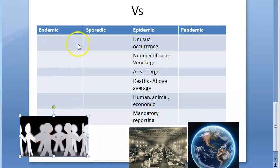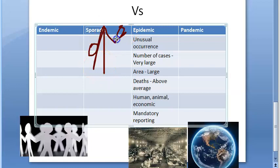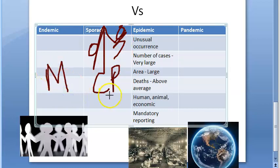Now let us move on to sporadic. Sporadic means irregular, haphazard occurrence of cases from time to time. It is not constantly present — sporadically, suddenly, it will start coming in. It is infrequent. An example is chickenpox. There is little or no connection between cases and no recognizable common source of infection. This can also become an epidemic under favorable conditions.